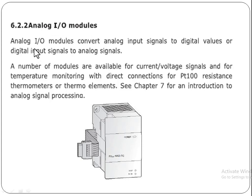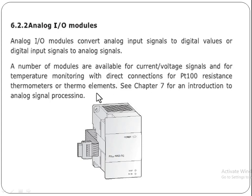Analog input output modules are used to convert the input signals to digital values, or digital signals to analog signals. A number of modules are available for current voltage signal and for temperature monitoring, with direct connections for PT300 resistance thermometers or thermo elements.